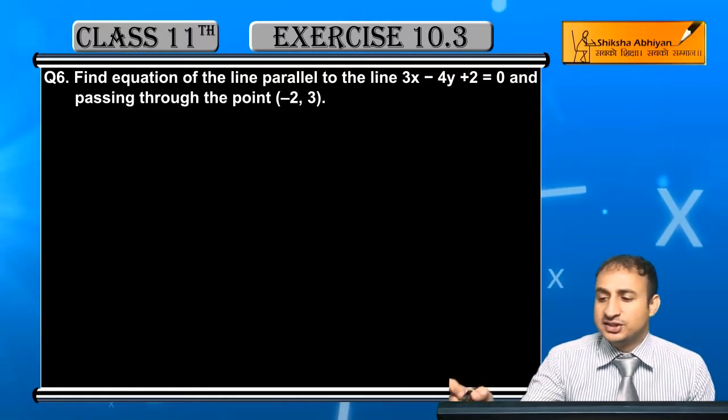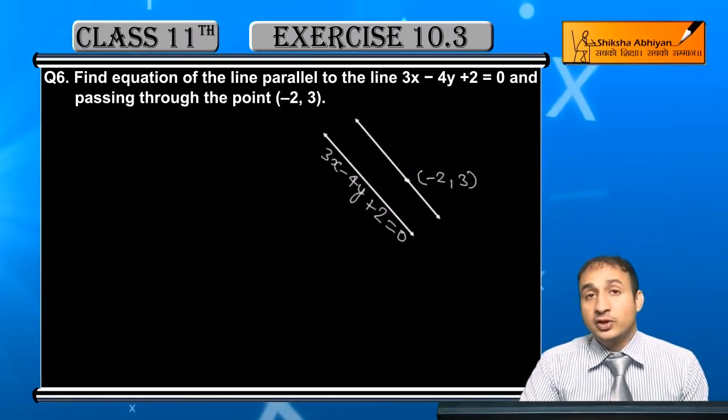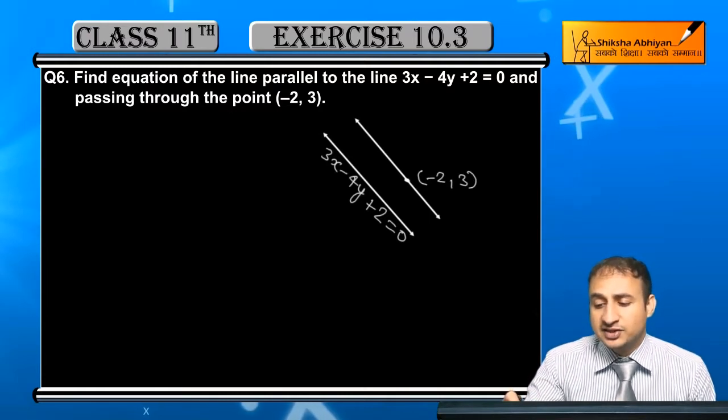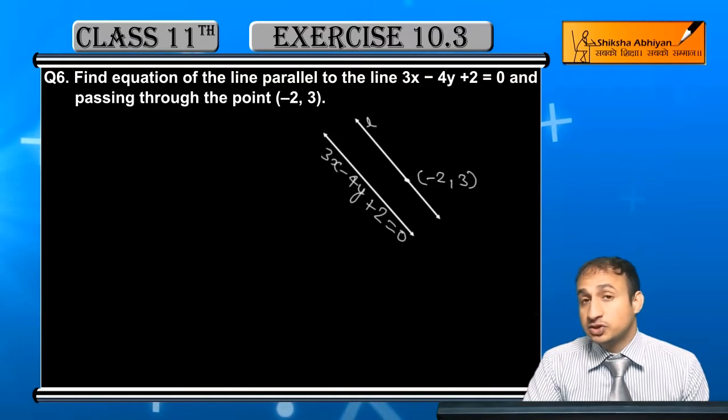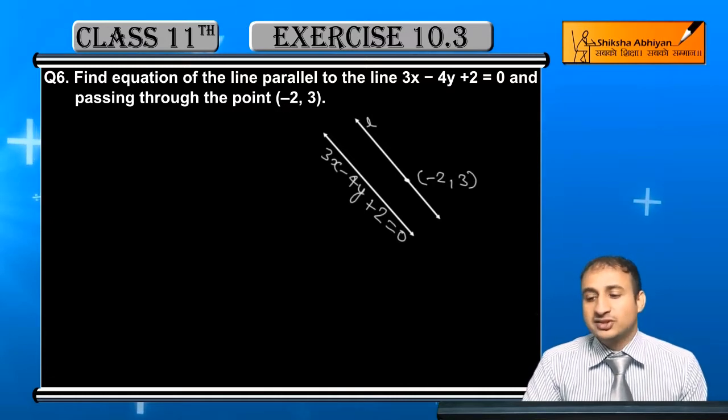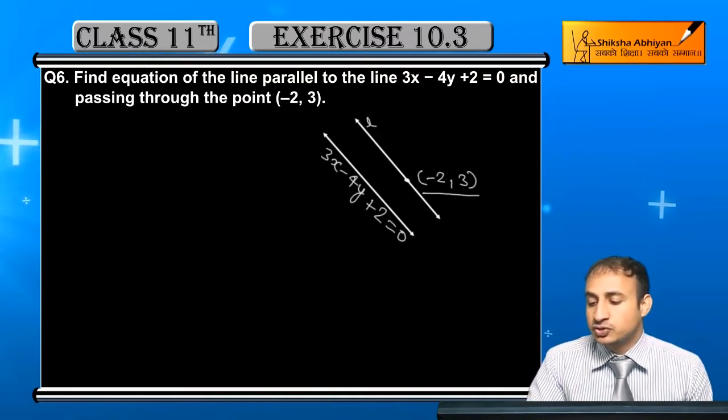We have to find the line equation. I will find the equation and determine the line which is parallel to 3x minus 4y plus 2 equals 0 and passing through the point (-2, 3).